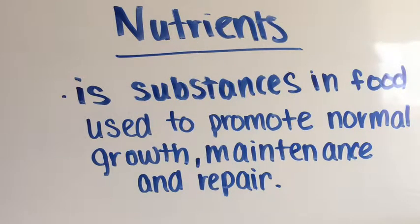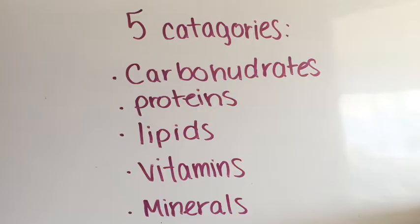First, we'll talk about nutrients. Nutrients are substances in food used to promote normal growth, maintenance, and repair. There are five different categories for nutrients: carbohydrates, lipids, proteins, vitamins, and minerals.